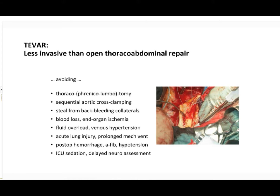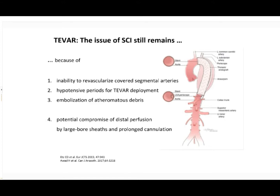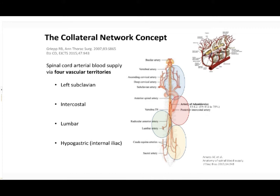T-bar is of course less invasive than open thoracoabdominal repair by reducing surgical trauma, avoiding extracorporeal perfusion, reducing blood loss, steal phenomena, end-organ ischemia, time on respirator, and time under sedation. Nevertheless, spinal cord injury remains an issue with T-bar. If a T-bar is inserted, some segmental arteries to the spinal cord will always be covered irreversibly. Rapid pacing and other interventions will induce hypotension. Ischemia may also be due to embolization of atheromatous debris, and there may be large bore introducers in the iliacs for hours in long procedures.